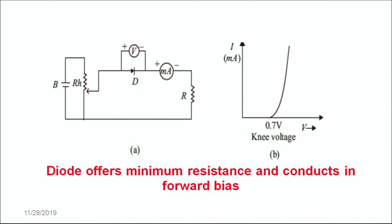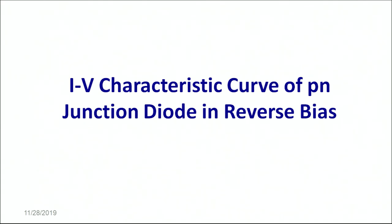In forward bias, the diode offers minimum resistance. Therefore, as soon as the knee voltage is attained, the diode shows a sharp increase in current as the voltage is increased. Once the knee voltage is attained, the diode increases the current as the voltage increases.